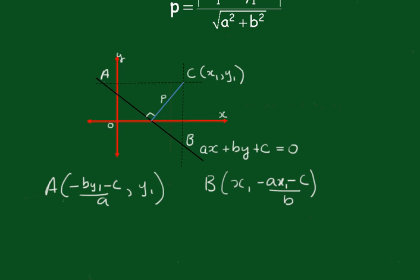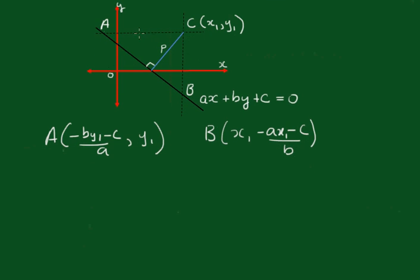Now the length of AC, this one up here, will be equal to x1. So AC is equal to x1 minus this one. Now you just need to be careful with all these negative signs floating about, and that comes out to being equal to ax1 plus by1 plus c all over a.